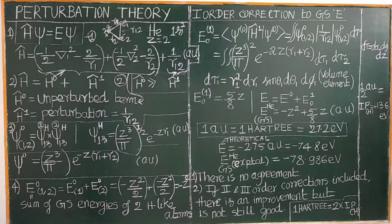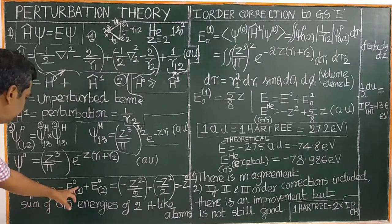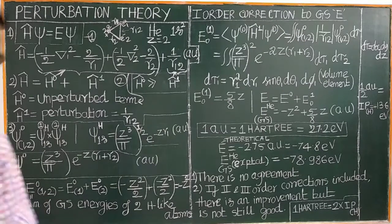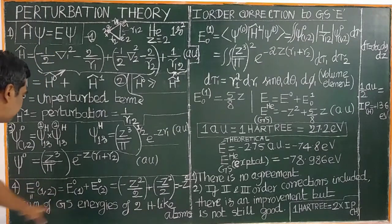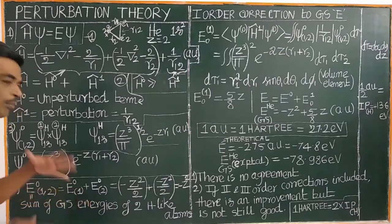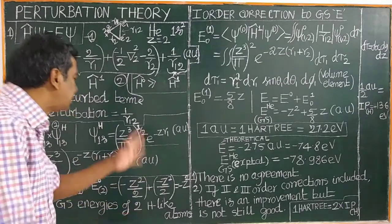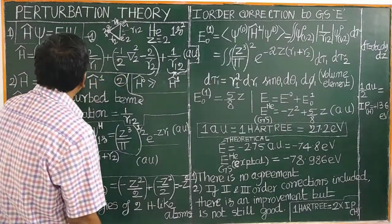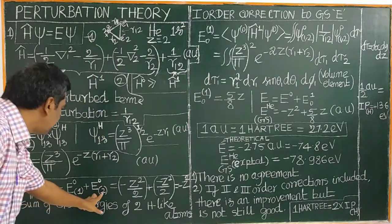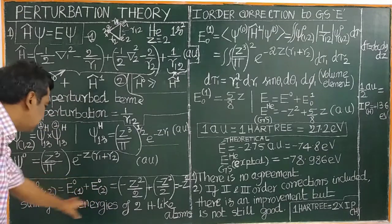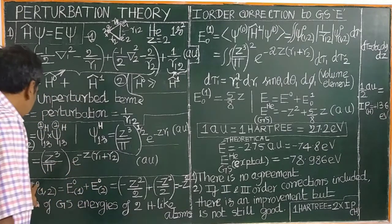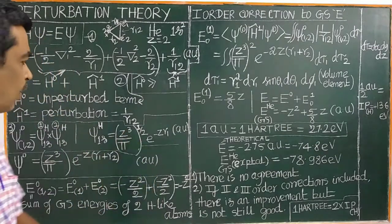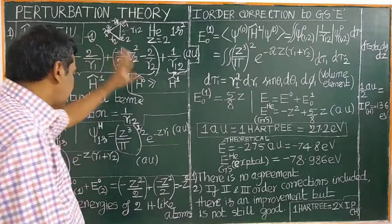The total energy is the summation of the total energy for the unperturbed term. It is equal to the sum of ground state energies of two hydrogen-like atoms. The energy involves electron-1 and electron-2, each contributing as a hydrogen-like atom.